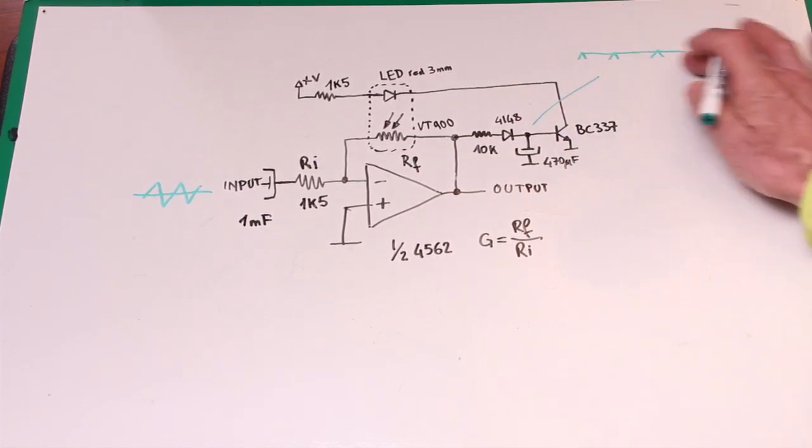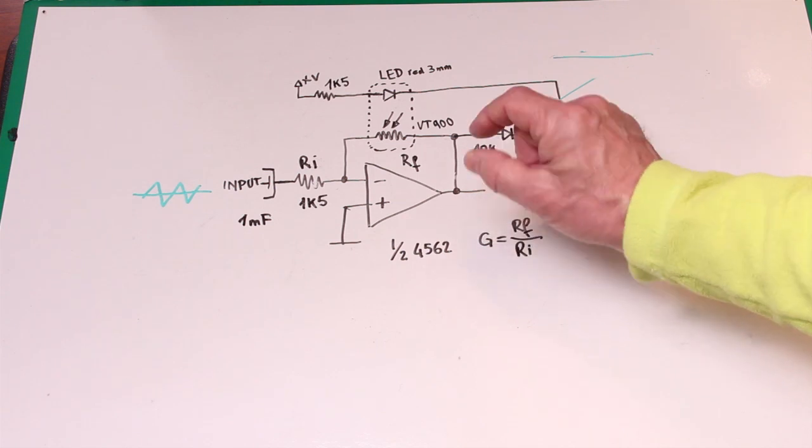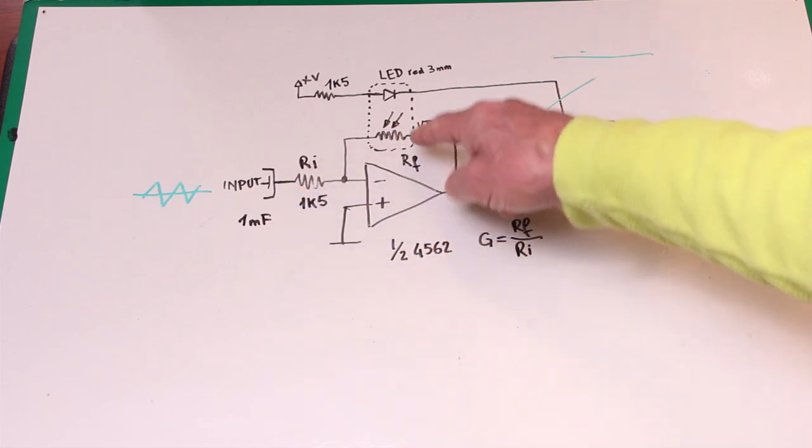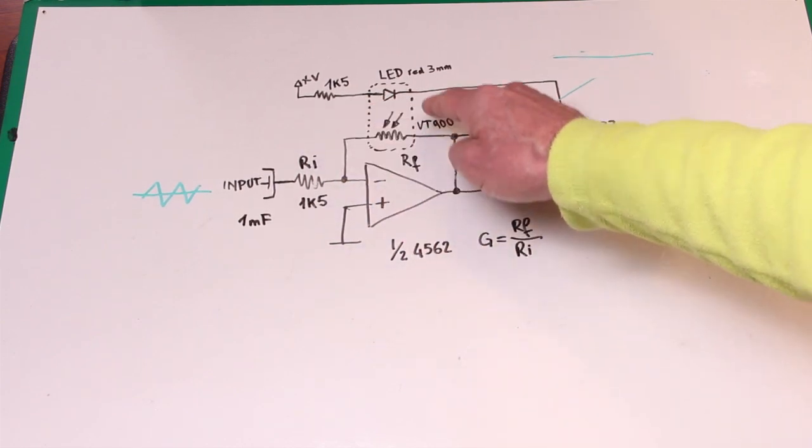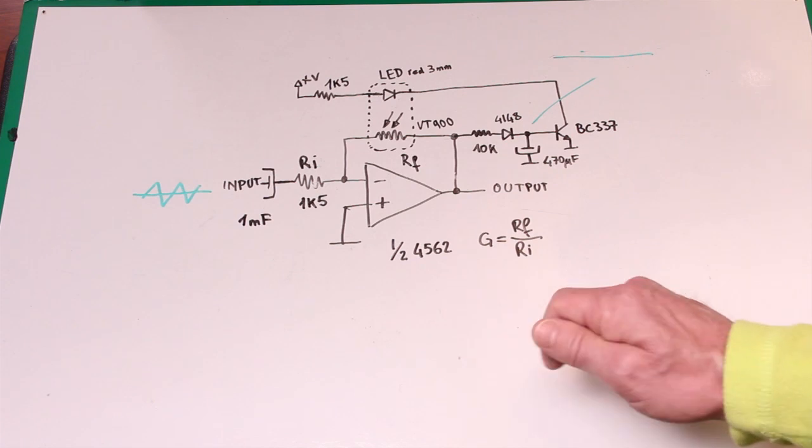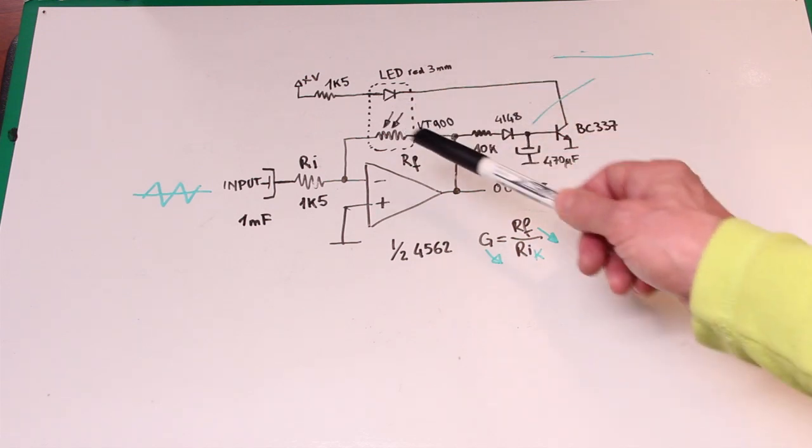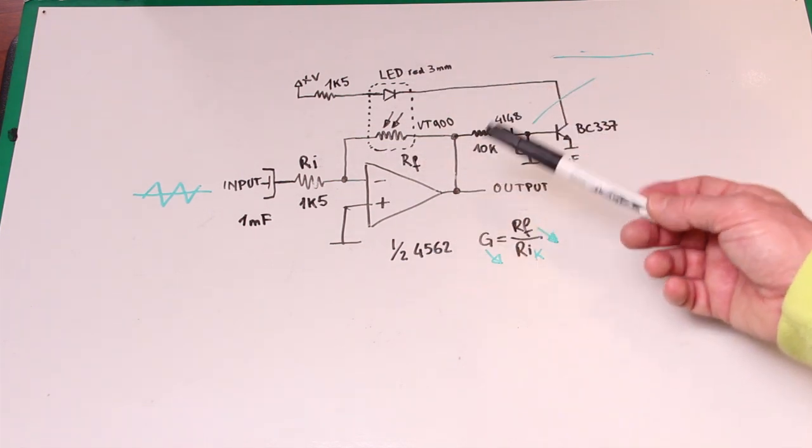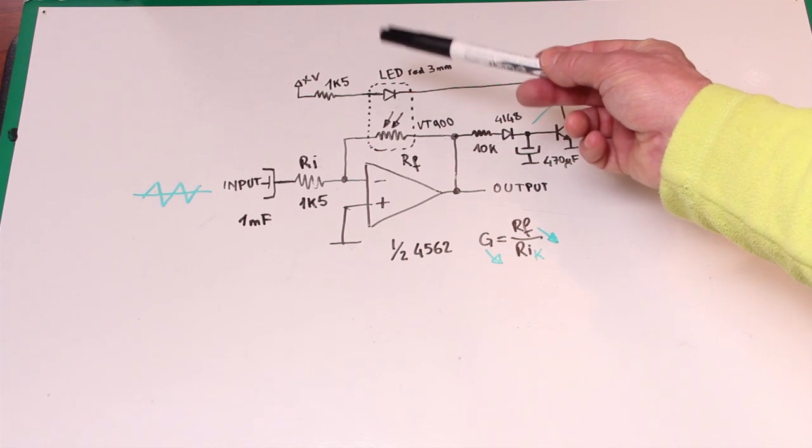Actually we here we have just this line, a continuous line that is dependent by the amplitude of the output signal that in turn depends by the gain of the operation amplifier given by the ratio between RF over RI and RF is given in turn by the light that reaches the VT 900 photoresistor. So the transistor drives the current through the LED of the optoresistor and this current will be proportional to the amplitude of the output signal. Therefore the more the amplitude, the more the LED will shine light.